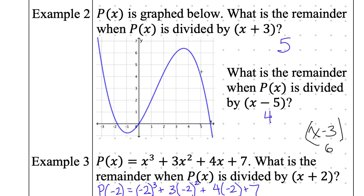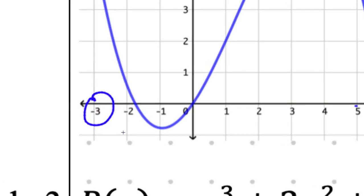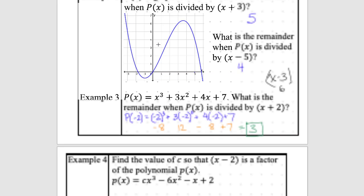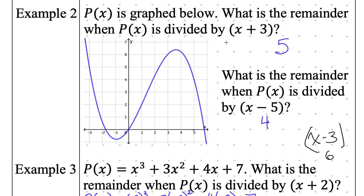Example number 2: x plus 3. What is the x coordinate I need to plug in? Switch it — it was positive 3, switch the sign — negative 3 on the x axis. Negative 3 corresponds to what y value? Look at the graph. Negative 3 comes up here to 5. I plug in the opposite of the linear factor: opposite of positive 3 is negative 3. I plug in negative 3 and I get the remainder — the y value and the remainder are the same thing.